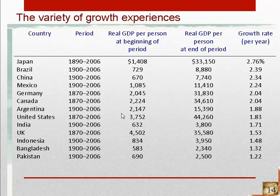Another story: Argentina was actually a pretty wealthy country back in 1900 by the standards of the day, and it has managed to grow at 1.88%. But Japan, which was significantly less wealthy than Argentina, by growing not even 1% faster over the intervening 100 years or so, managed to totally overtake Argentina. Japan is now near the top of the heap economically worldwide — somewhat lower than the U.S., but comparable to Germany, Canada, or the U.K. Whereas Argentina, despite a relatively decent growth rate, has really fallen behind.